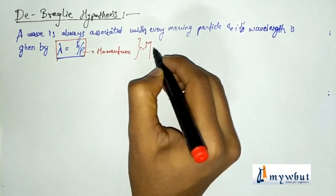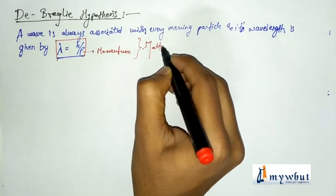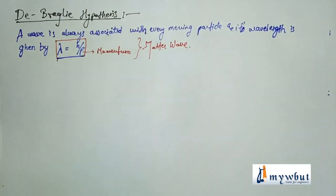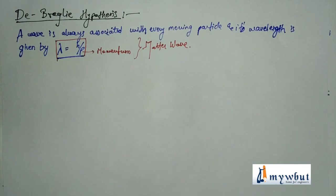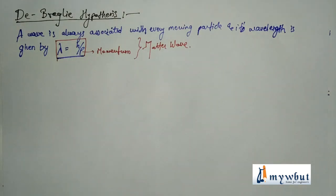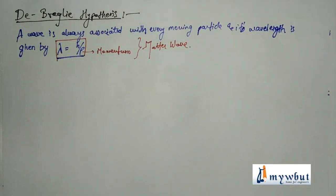This wave associated with a moving particle is known as a matter wave. The wavelength of a matter wave is called the De Broglie wavelength, and the equation lambda = h/p is called the De Broglie relation or De Broglie wave equation.